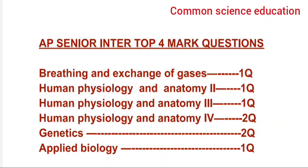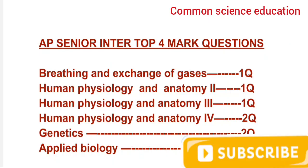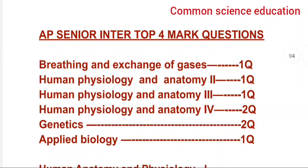Breathing and exchange of gases is one question, and human physiology and anatomy 2 — circulation and excretion — is one question, mostly diagram-based. Human physiology and anatomy 3 is one question. Musculosystem, neural control and coordination, and human physiology and anatomy 4 — endocrine system and immune system — plus genetics: 2 questions. Applied biology: 1 question. For unit 4 and genetics, prepare very short answers; 4 marks questions are not ready to cover.